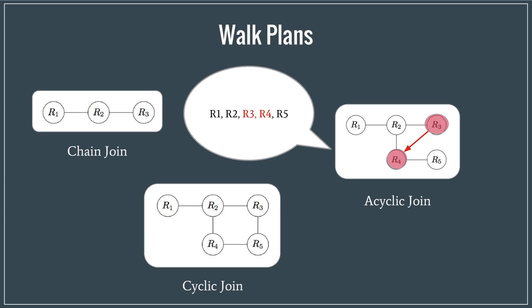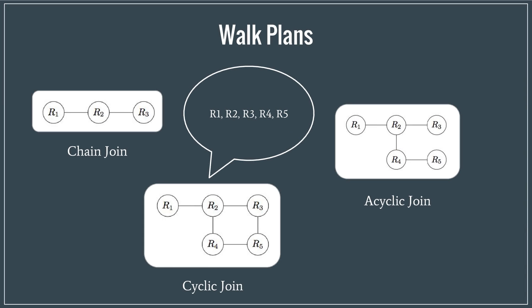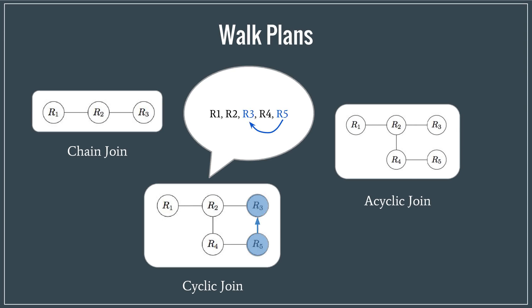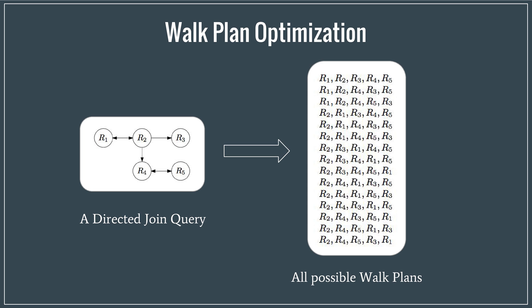And for the cyclic join, we perform the same random walk as that of the acyclic one, but with an additional step of checking whether R5, R3 join is possible. If it's not, we return an estimator with value 0. It is important to observe that there can be multiple walk plans for the same spanning tree which have different impact on performance.